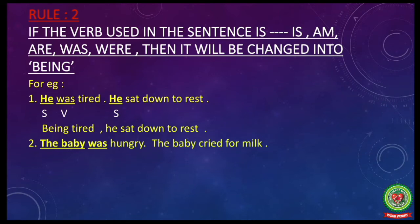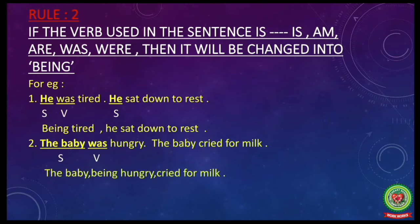Let's take one more example: 'The baby was hungry. The baby cried for milk.' The subject is the same — 'the baby' — and the helping verb 'was' is used, so 'was' will change into 'being.' The answer will be: 'The baby, being hungry, cried for milk,' or 'Being hungry, the baby cried for milk.'